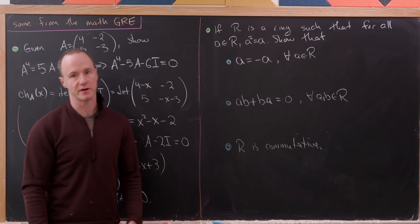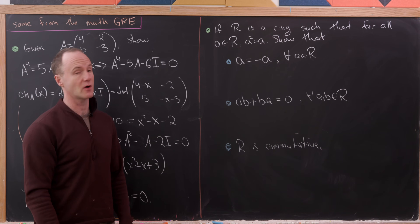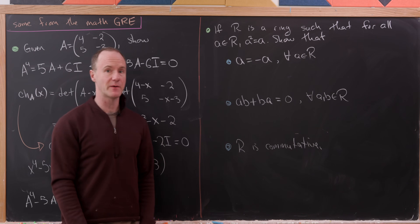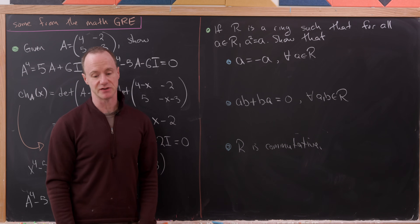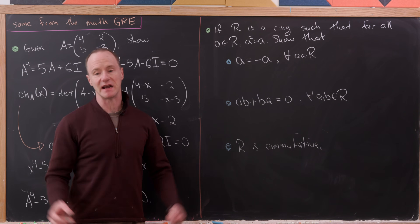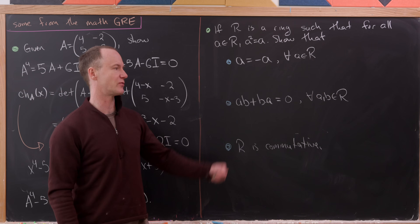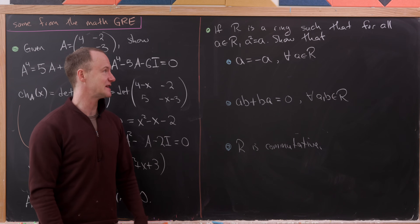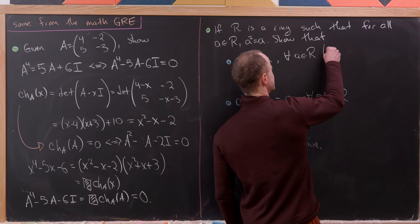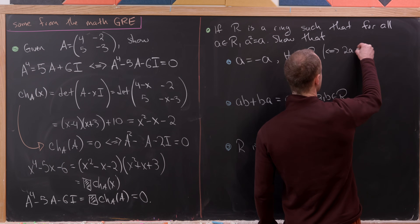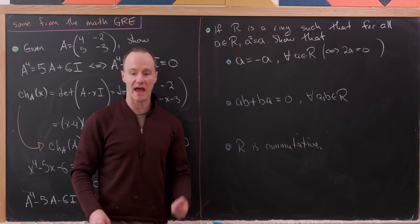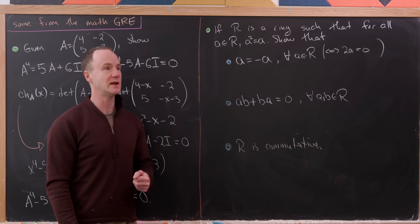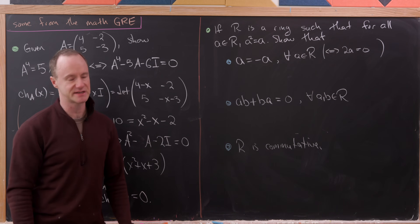Our next problem is a ring theory problem. We have a ring R where a² = a for all elements a (sometimes called a Boolean ring). We want to show three things: first, that a = −a (equivalently 2a = 0); second, that ab + ba = 0; and third, that the ring is commutative. Showing 2a = 0 also implies that the characteristic is 2.